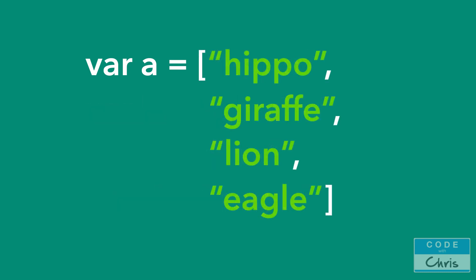Using an array is very handy for this purpose. Take a look at this syntax: var a equals, and then what we're assigning is an array, dictated by the square brackets. Inside of it we have multiple values with a comma in between each value. In this way we can store all of those strings into one variable 'a'. Now how do I access each individual value? Let me jump into the playground and show you.